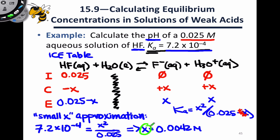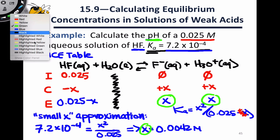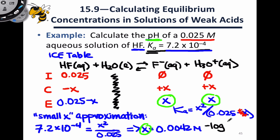This X value is the equilibrium concentration of fluoride and the equilibrium concentration of hydronium. To calculate the pH, we take the negative base-10 logarithm of that X value. In acid-base equilibrium problems like this, that's always going to be the case when we started with zero initial hydronium, since X equals the equilibrium value of H₃O⁺. The negative base-10 logarithm of 0.0042 comes out to 2.37 — this is the equilibrium pH of that 0.025 molar aqueous solution of HF.